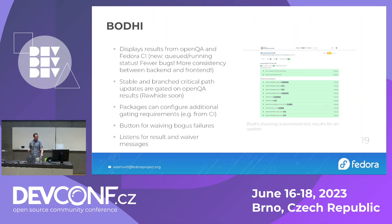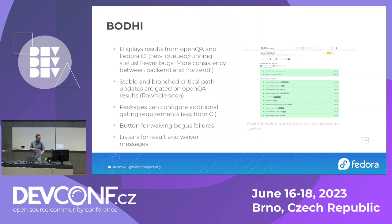Updates for stable releases and branched releases are gated on most of the OpenQA tests - if one of those tests fails, your update cannot go stable. Right now Rawhide is not officially gated, but I'm probably going to turn that on after this talk since FESCo has approved it. We've been shadow-gating Rawhide for a while - when we find a bug in an update for Rawhide, we will untag it before it makes a compose. So effectively Rawhide has been gated for several months, we just weren't telling anyone about it. It's made Rawhide way more stable. Packages can configure additional gating requirements by dropping a gating.yaml file in your package repository.